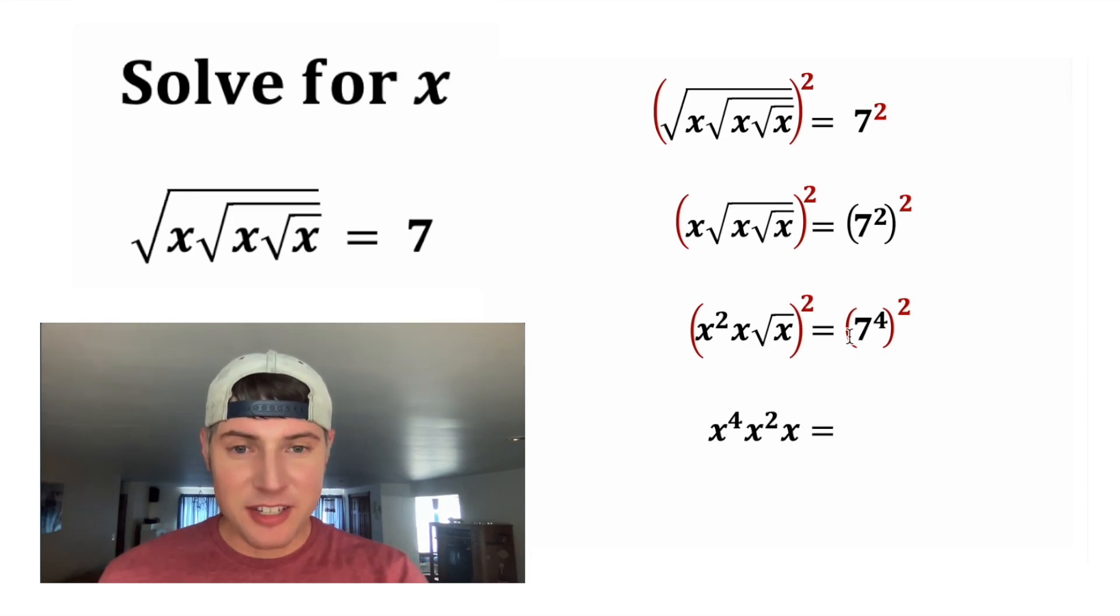And then on the right hand side, 7 to the fourth squared, we can just multiply the four times the two to give us 7 to the 8.